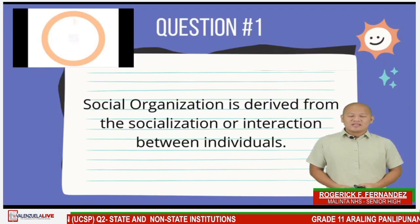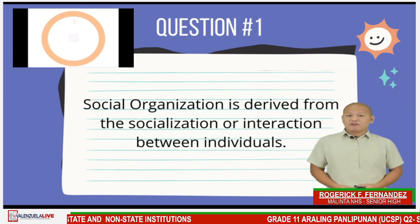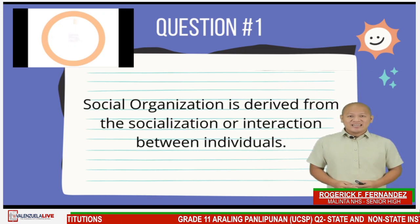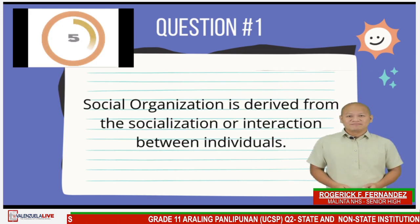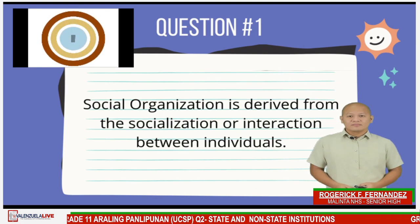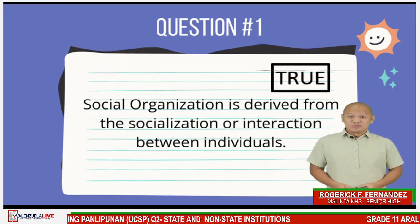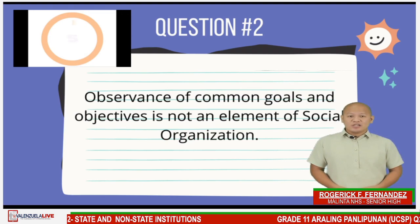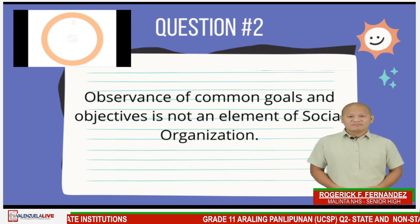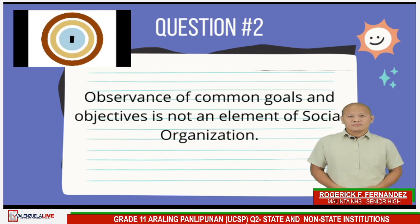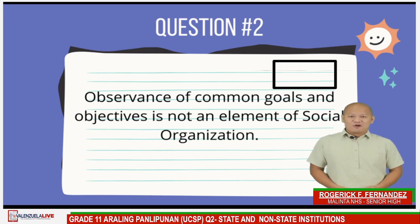Question number one: Social organization is derived from the socialization or interaction between individuals. Five seconds to answer. The answer is TRUE.